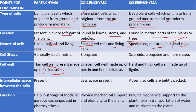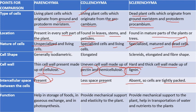Cell wall: parenchyma cell walls are made of cellulose; colenchyma cell walls are made of pectin and hemicellulose; sclerenchyma cell walls are very hard and thick, made of lignin. Intercellular space: present in parenchyma, very little in colenchyma, and absent in sclerenchyma. Functions: parenchyma helps in storage of food, gaseous exchange, and photosynthesis; colenchyma provides mechanical support and elasticity; sclerenchyma provides mechanical support and helps in transportation of water and nutrients. That's it for simple permanent tissue — I hope that's helpful.